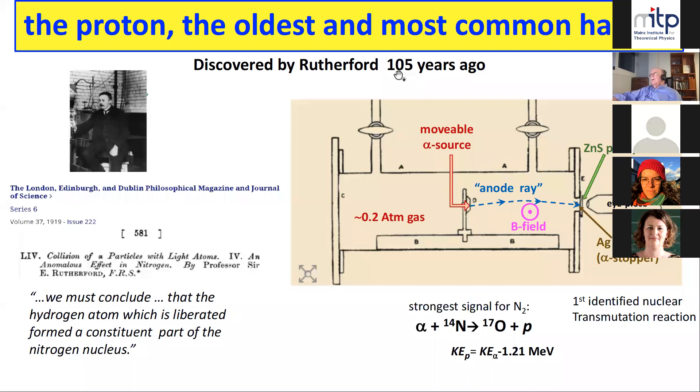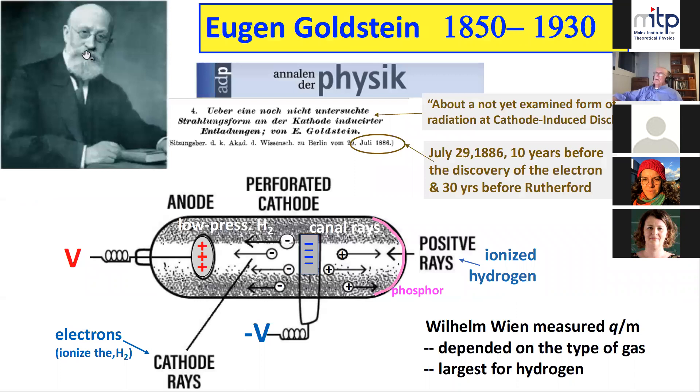So that was a hundred years ago, and the proton's been around for a hundred years. What's new to learn about the proton? Well, the first thing new I learned was that Rutherford didn't discover the proton. In fact, the proton was discovered by Eugene Goldstein, a German. He was born in a part of Poland that subsequently became part of Germany. He had a laboratory in Potsdam. This was in 1886, which was even before the electron was discovered.